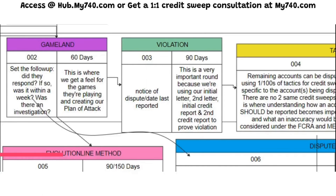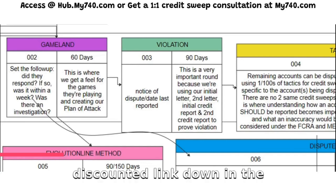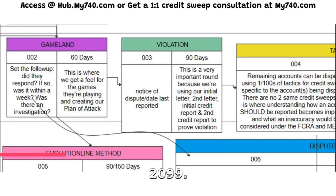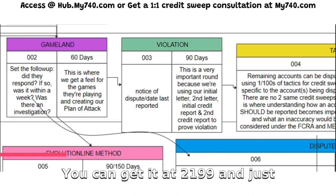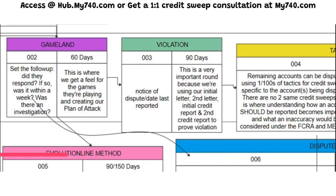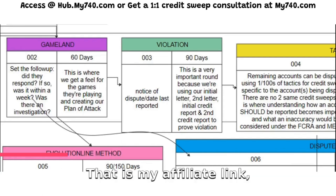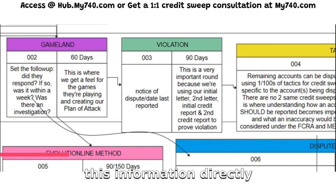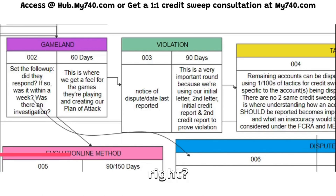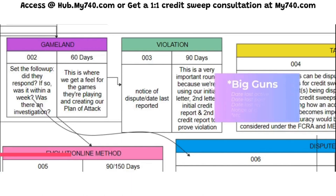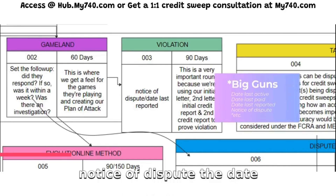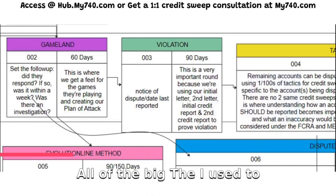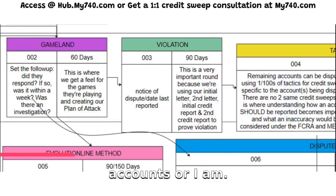If you're using Identity IQ — and you can access a discounted link in the description so you're not paying their full price of $29.99, you can get it at $21.99, that is my affiliate link — you're going to get this information directly: the date last reported, the date notice of dispute, the date last active, the date last paid, and so on — all the big data points I use to remove very difficult accounts.